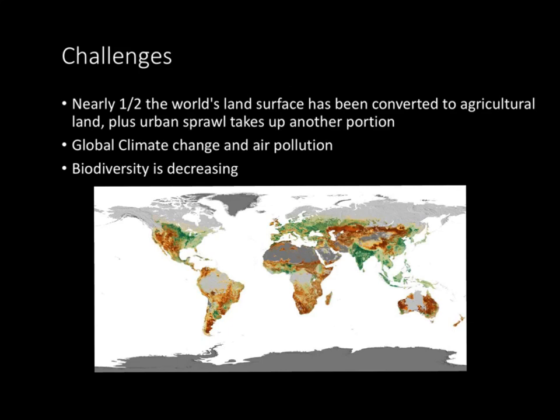Challenges. Currently, nearly one half of the world's land surface has been converted to agriculture, and urban sprawl takes up another large portion of this. Global climate change is another huge issue in environmental science, and its effects are leading to a decrease in biodiversity. When biodiversity is decreasing, this indicates an uneven, unstable environment.